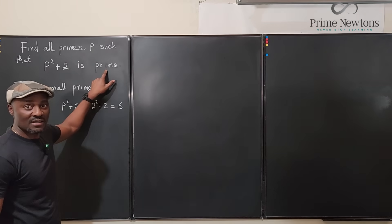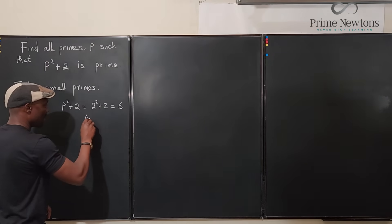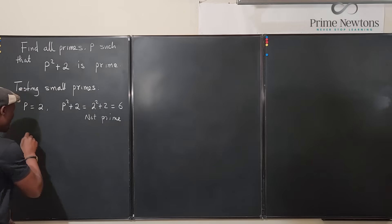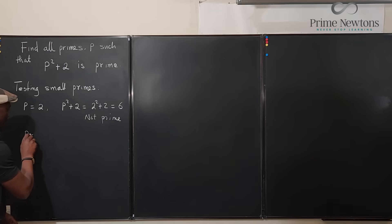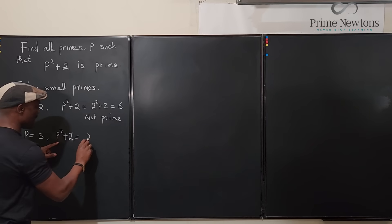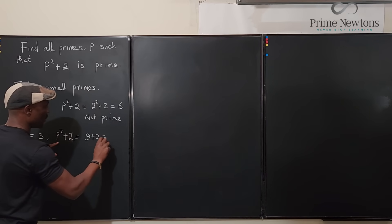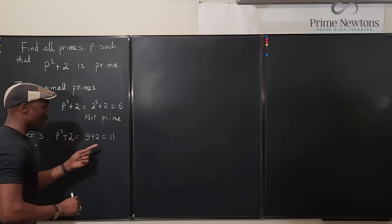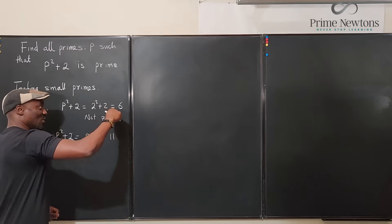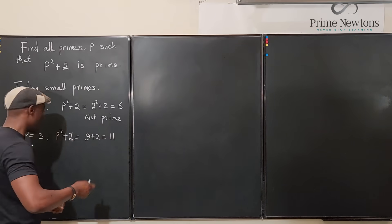Okay, so let's take the next prime number. We take p equals 3 and what do we get? We're gonna get 9 plus 2 which is 11. Oh, this one satisfies the condition. So now we found that 2 did not satisfy, 3 satisfies it.